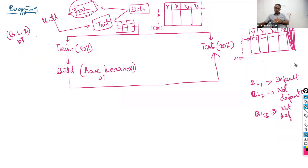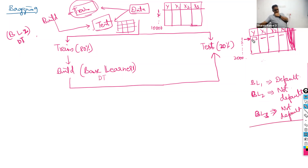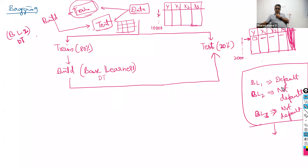Base learner three says the person will not default. You then combine the results. The final output uses majority voting — hard voting. Two out of three say not default, so the final output will be that the person will not default.